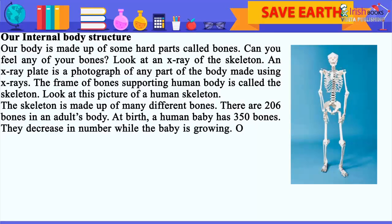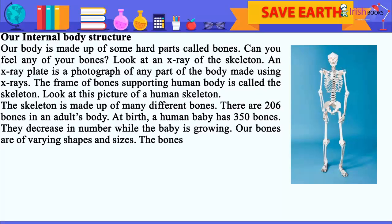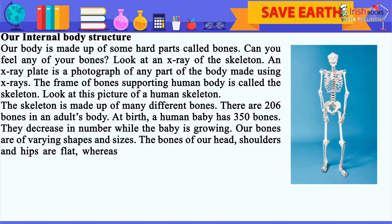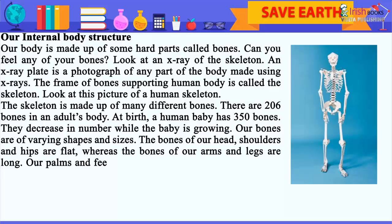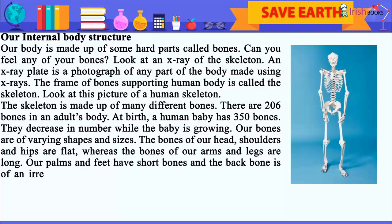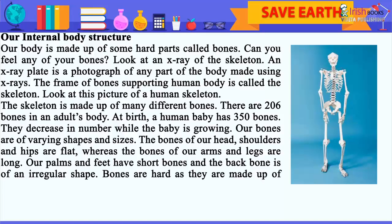The number of bones decreases as the baby is growing. Our bones are of varying shapes and sizes. The bones of our head, shoulders and hips are flat, whereas the bones of our arms and legs are long. Our palms and feet have short bones, and the backbone is of an irregular shape. The bones are hard as they are made up of calcium, phosphorus and protein.